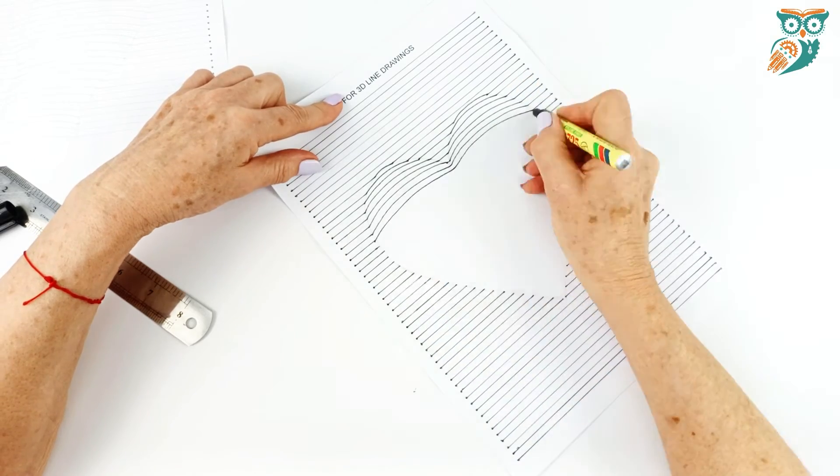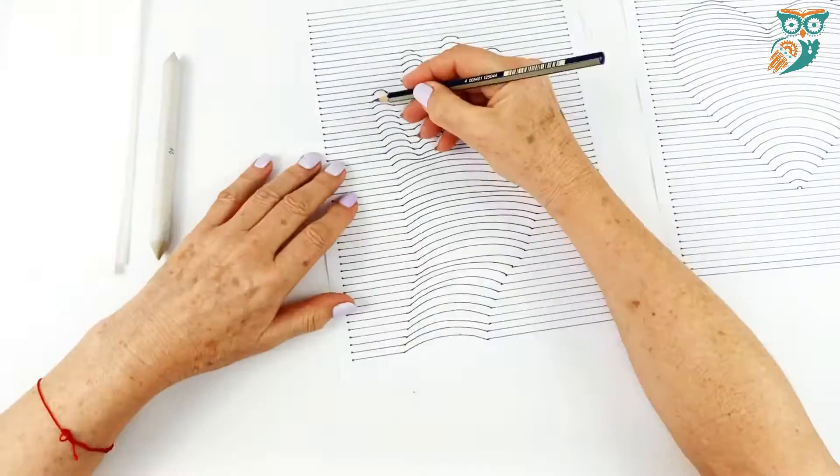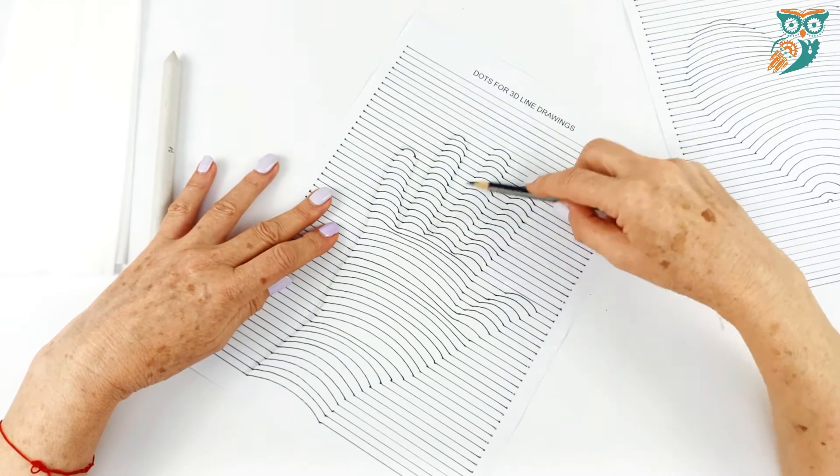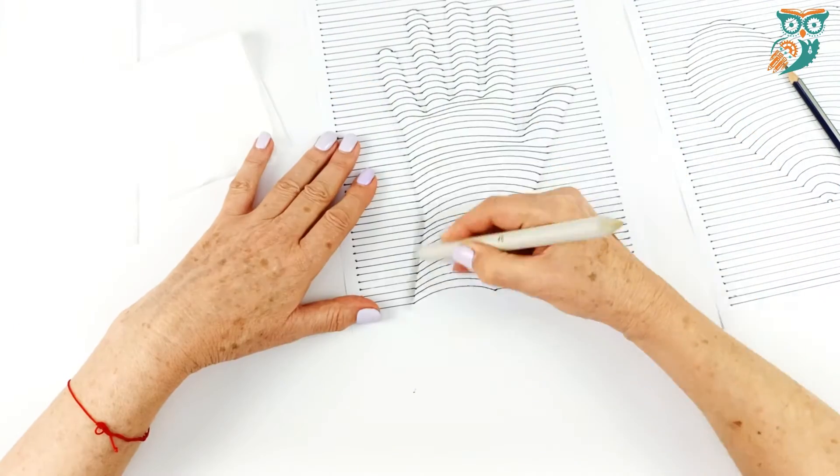And then we're going to do the same thing with the heart and add those curved lines. Those curved lines are so important for giving it that first level of depth. Now we're using our 4B pencil and going around the edges of our images. And this is to help create shading.